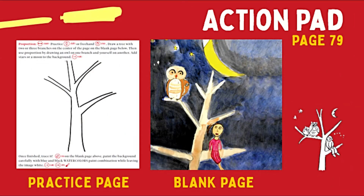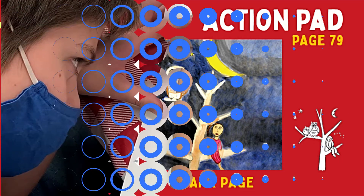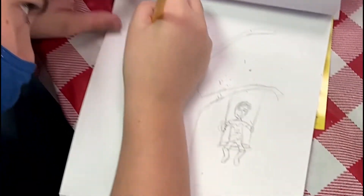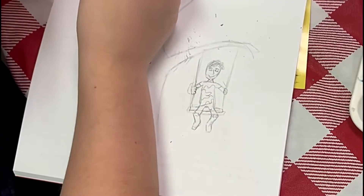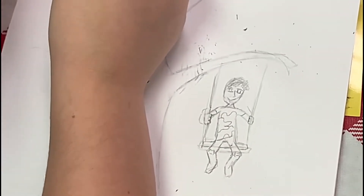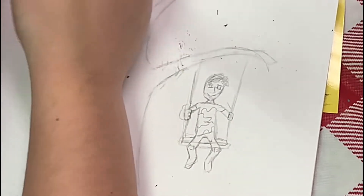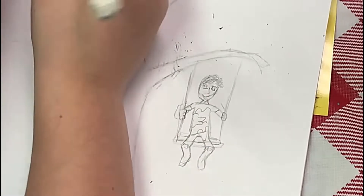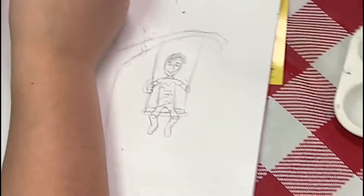Kids, it is time to go to our yellow action pad. Let's go to page 79. Using a soft pencil, we are going to draw a tree with two or three branches on the center of the page on the blank page of our yellow action pad.